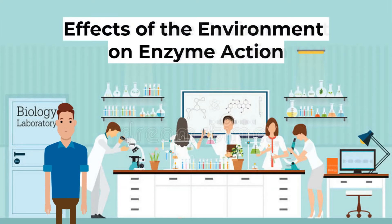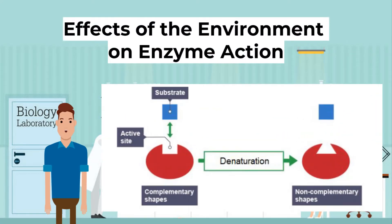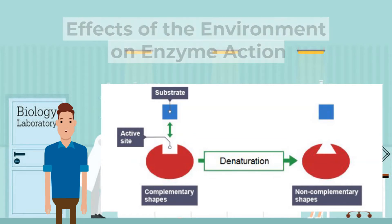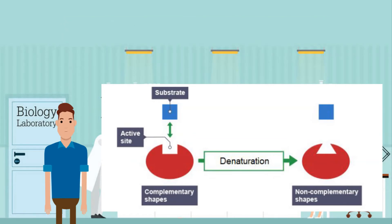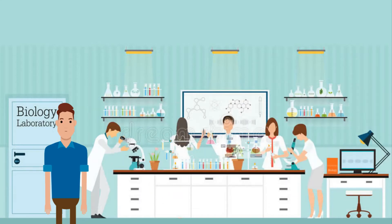Next, let's look at the effects of the environment on enzyme action. An enzyme can be denatured by the environment, for instance by high temperatures or extreme pH. Denaturation is when the enzyme's shape is changed and the active site is no longer specific, so the enzyme can no longer catalyze the reaction.